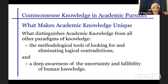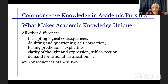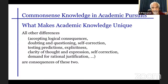Accepting logical consequences, doubting and questioning, self-correction, testing predictions, and explicitness are all simply consequences of these two central pillars: the prohibition of logical contradictions and awareness of uncertainty and fallibility.